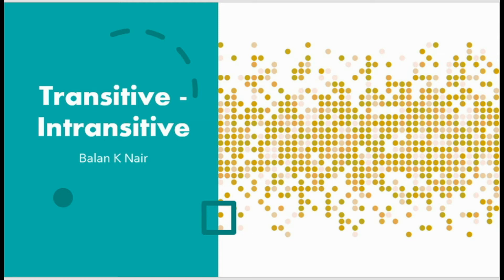Well, transitives and intransitives. In Malayalam we call it sakarmakam and akarmakam. Sa means 'with' — karmathod koodi yadu — meaning 'that which comes with a karma.' Karmam illya thadu means 'that which has no karma.'